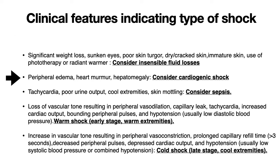A neonate presenting with peripheral edema, heart murmur, and hepatomegaly should be considered for cardiogenic shock. If the neonate presents with tachycardia, poor urine output, cool extremities, and skin mottling, then consider sepsis.